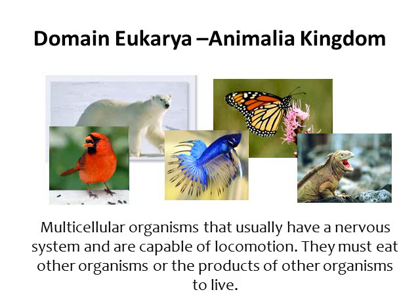The fourth and final kingdom in Eukarya is the Animal kingdom. Animals are also multicellular, and they usually have a nervous system so they can get information from their environment. They're also capable of movement or locomotion. Like fungi, they cannot produce their own food — they have to eat other organisms or their products to live. The animal kingdom includes fish, birds, reptiles, amphibians, invertebrates like insects, and mammals.